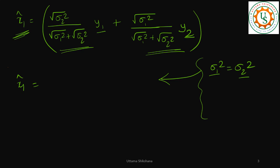So if both of them are equal then what do I get? In which case I can take out, it will become 2 into square root of sigma 1 square divided by square root of sigma 1 square plus square root of sigma 2 square, y1 plus y2. Sigma 2 square is equal to sigma 1 square, so I am writing sigma 1 square. So in which case I will get 1 by 2 into y1 plus y2.